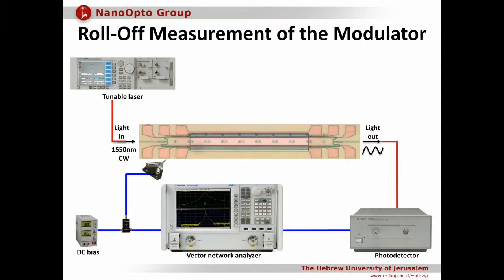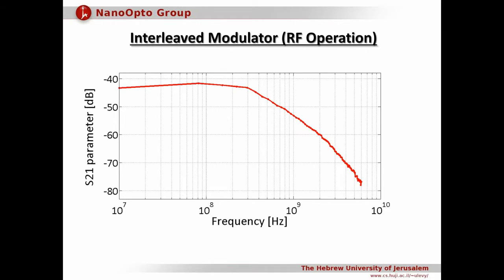For completeness, we also perform frequency measurement. Specifically, we measure the 3 dB roll-off frequency of the device by connecting its electrical input and optical output to a vector network analyzer. Based on these measurements, our modulator demonstrates a 3 dB optical bandwidth of about 0.5 gigahertz.